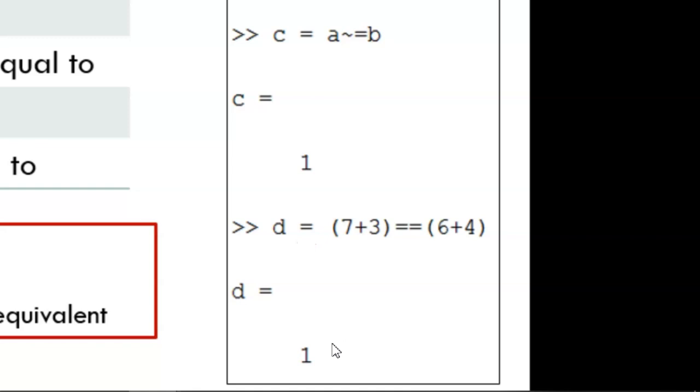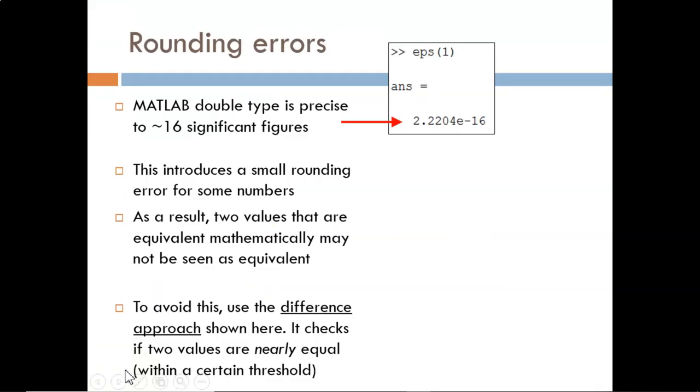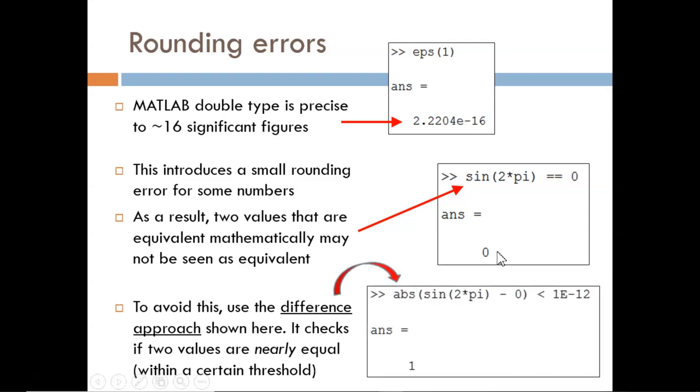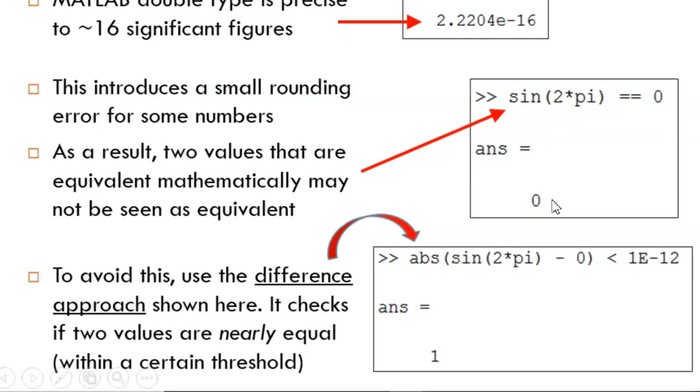A word of warning when using the equivalency operator. MATLAB, like any computer program, produces rounding errors. The double data type is extremely precise to about 16 significant figures, but it is not perfectly precise. So, an irrational number like pi cannot be perfectly represented. We know from trigonometry that sine of 2 pi should be equal to 0. Mathematically, that is correct, but when we ask MATLAB if they are equivalent, it returns a false value due to the rounding error. To avoid errors related to this, consider using this difference approach. It checks to see if two values are close enough.